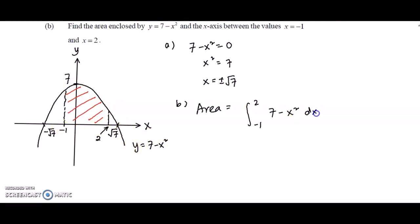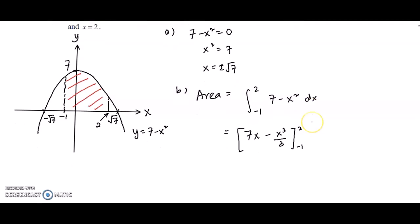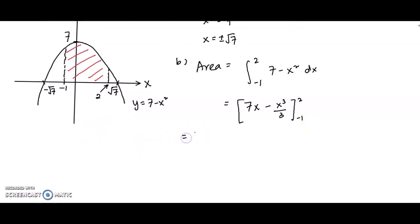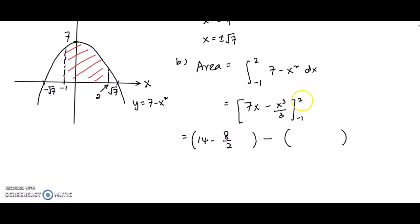Integrating with respect to x: integrating 7 gives 7x, and integrating x squared gives x cubed over 3. We substitute the lower and upper limits using two brackets. Substituting 2 gives 14 minus 8 over 3. Substituting negative 1 gives negative 7 minus negative 1 over 3.